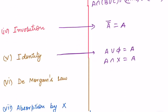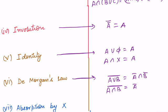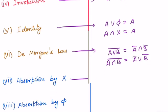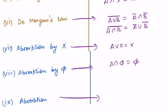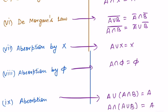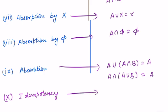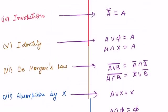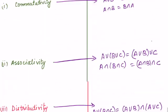Next is De Morgan's law — a very important law. Fuzzy sets follow it. That is, (A union B) complement equals A complement intersection B complement, and (A intersection B) complement equals A complement union B complement. Next is absorption by X: A union X equals X. Absorption by phi: A intersection phi equals phi. General absorption: A union (A intersection B) equals A, and A intersection (A union B) equals A. Also, A union A equals A, and A intersection A equals A.